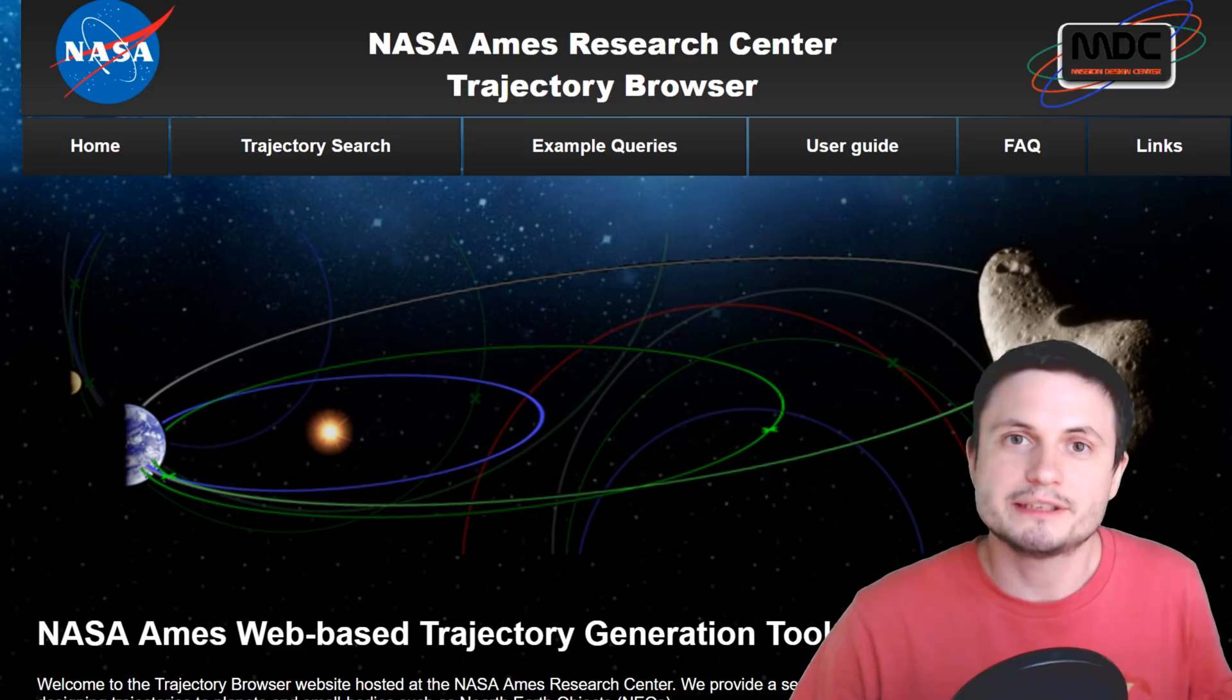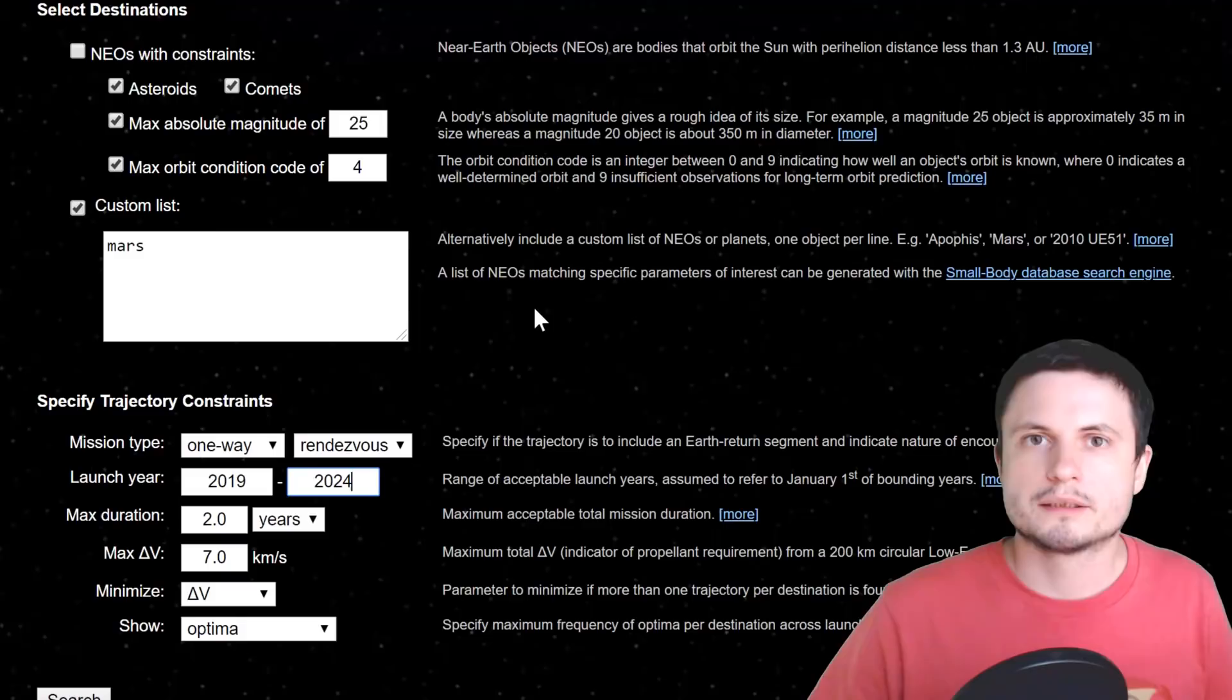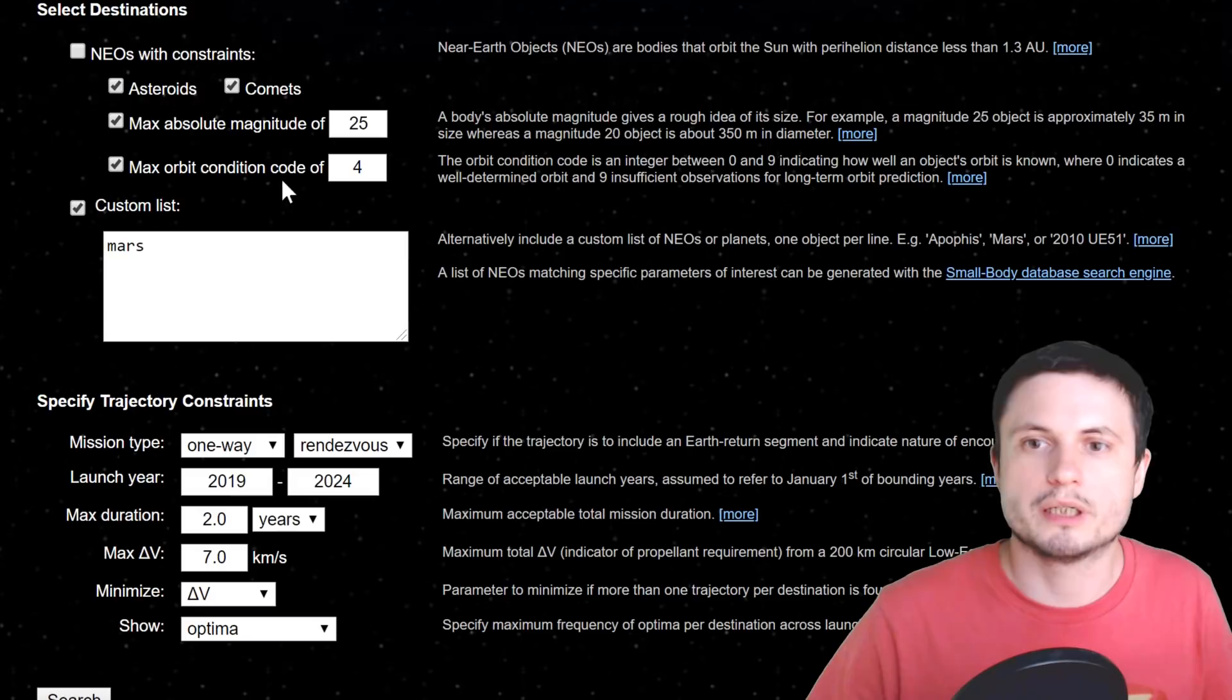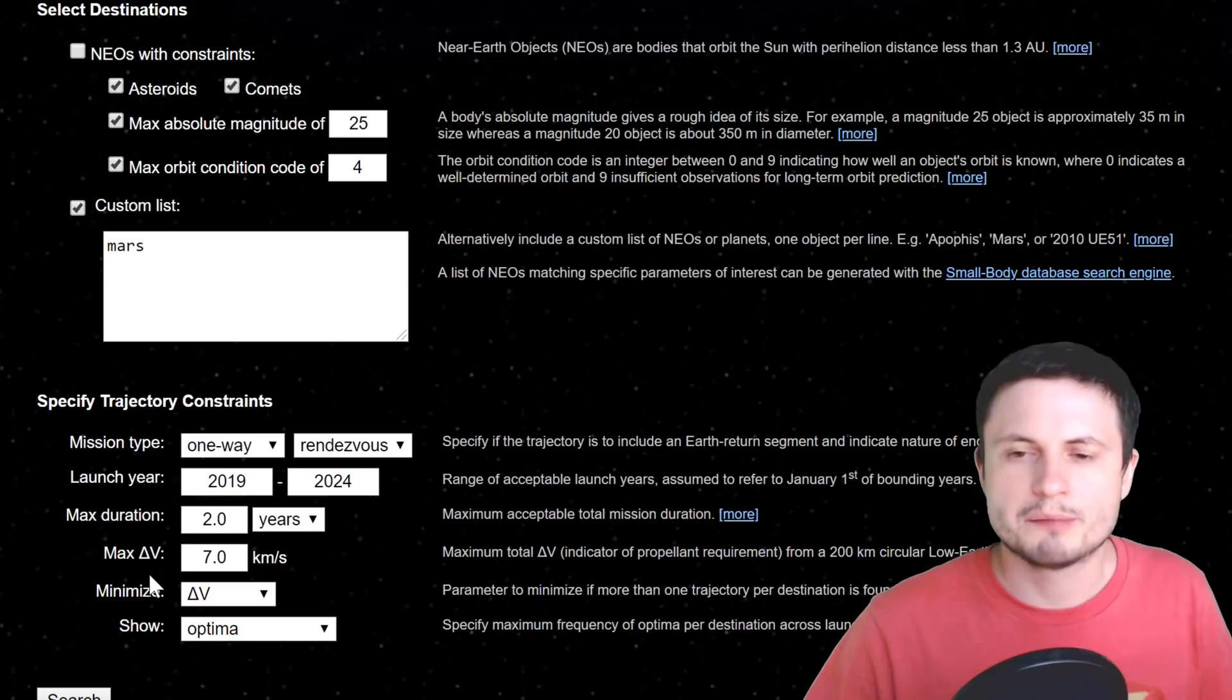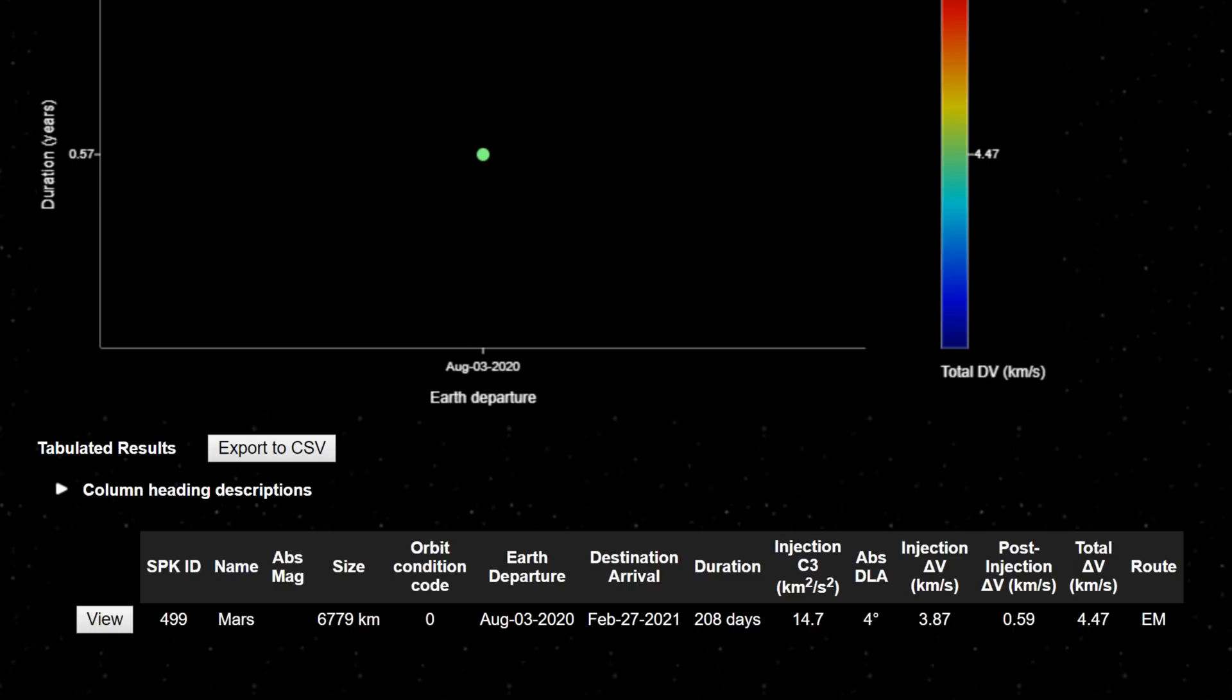NASA created a very awesome website that allows you to calculate basically trajectories and distances and also time for the transfer maneuvers needed for pretty much every major object in the solar system. So we can use this website to calculate everything we need to know about a transfer to Mars from Earth, from the so-called low Earth orbit. Although technically here would be in much higher orbit, but let's just ignore that for now. So if we click on search,